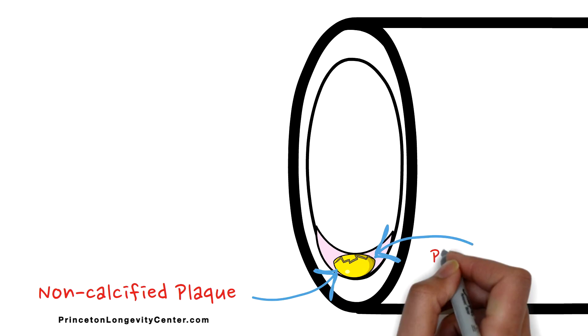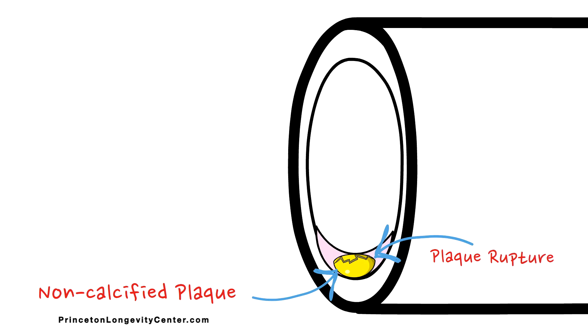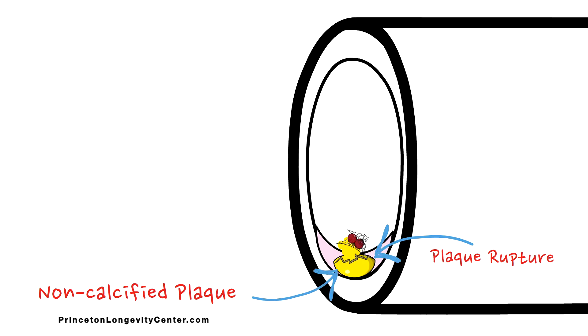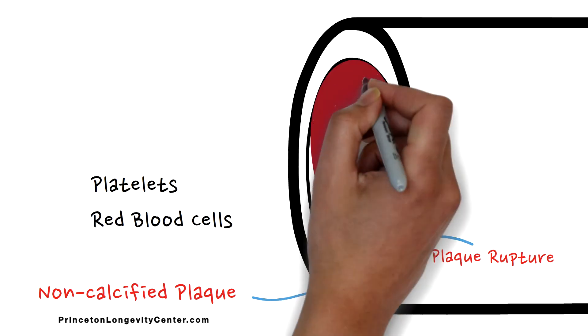The problem with non-calcified plaque is that it's at risk for breaking apart or plaque rupture. And if this occurs, that's typically the moment you're having a heart attack. Within milliseconds, platelets start to aggregate, and red blood cells form a thrombus, or blood clot.